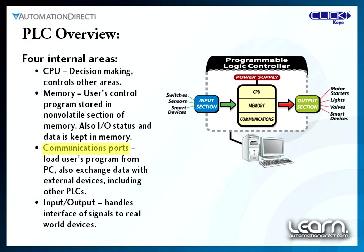The third area is communications. One or more communication ports are available to allow the user's program to be loaded into its memory from a personal computer, and to also communicate with external devices including other PLCs in order to exchange data. The final area is the PLC's IO — the input and output signals to real-world devices.